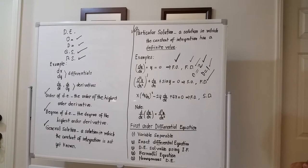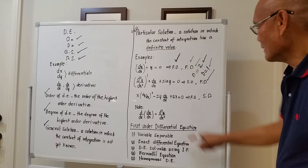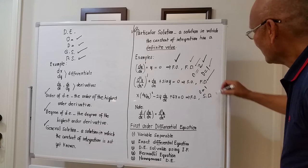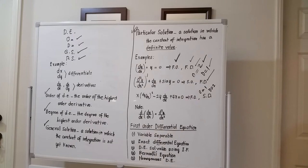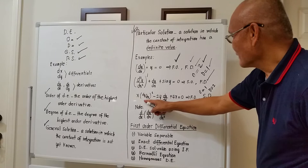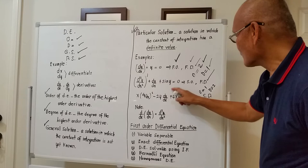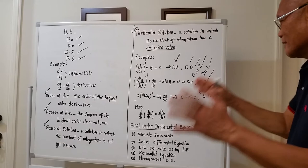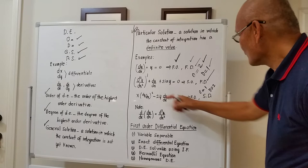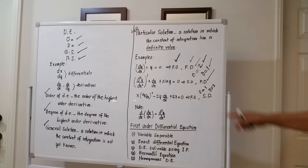Last example: x(dy/dx)² − 2y(dy/dx) + 4x = 0. The order is first order and the degree is two. Why? dy/dx comes out only once — the highest is one — so the order is one. The degree is the exponent bracketing dy/dx, which is 2. So the degree is two.